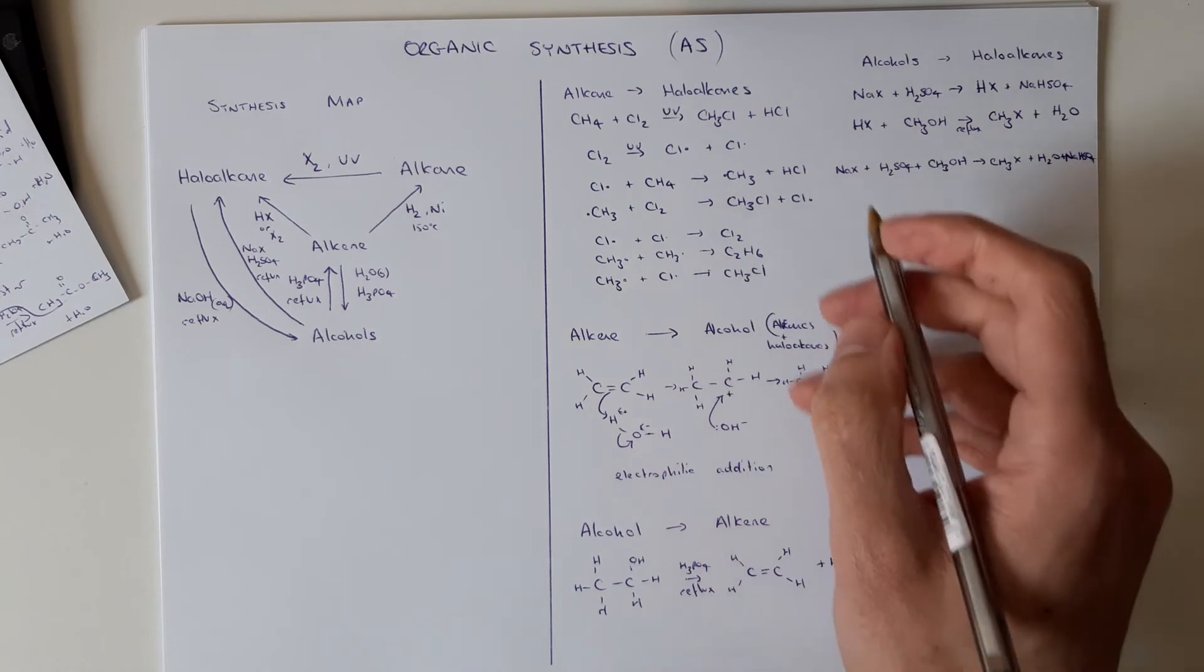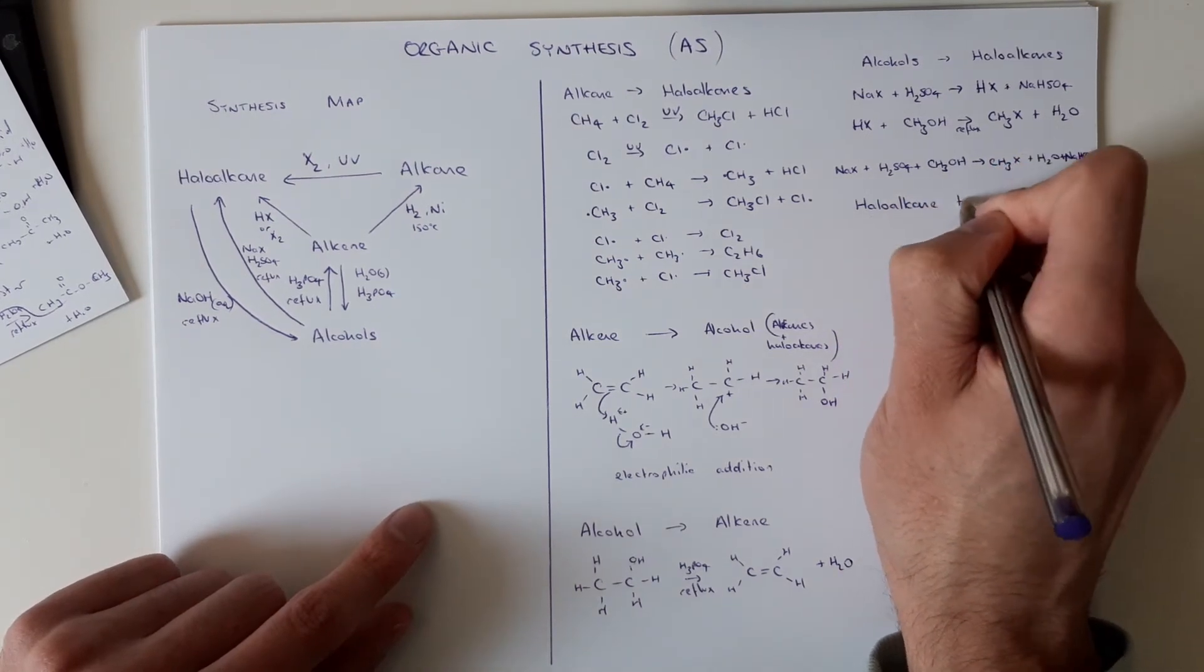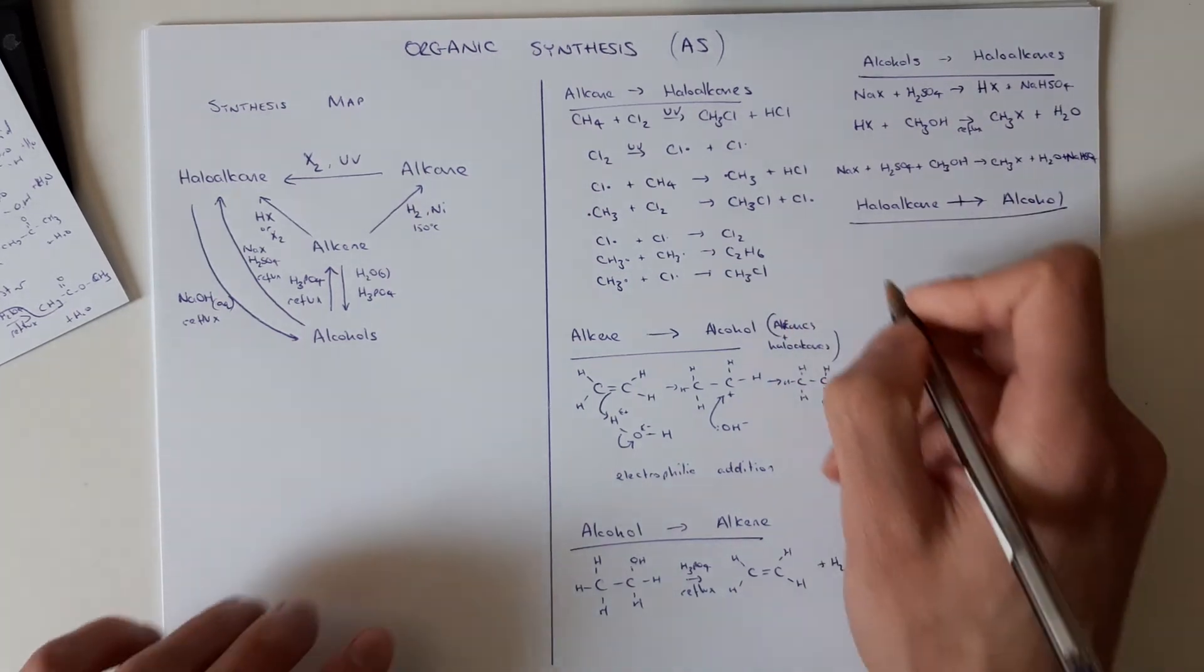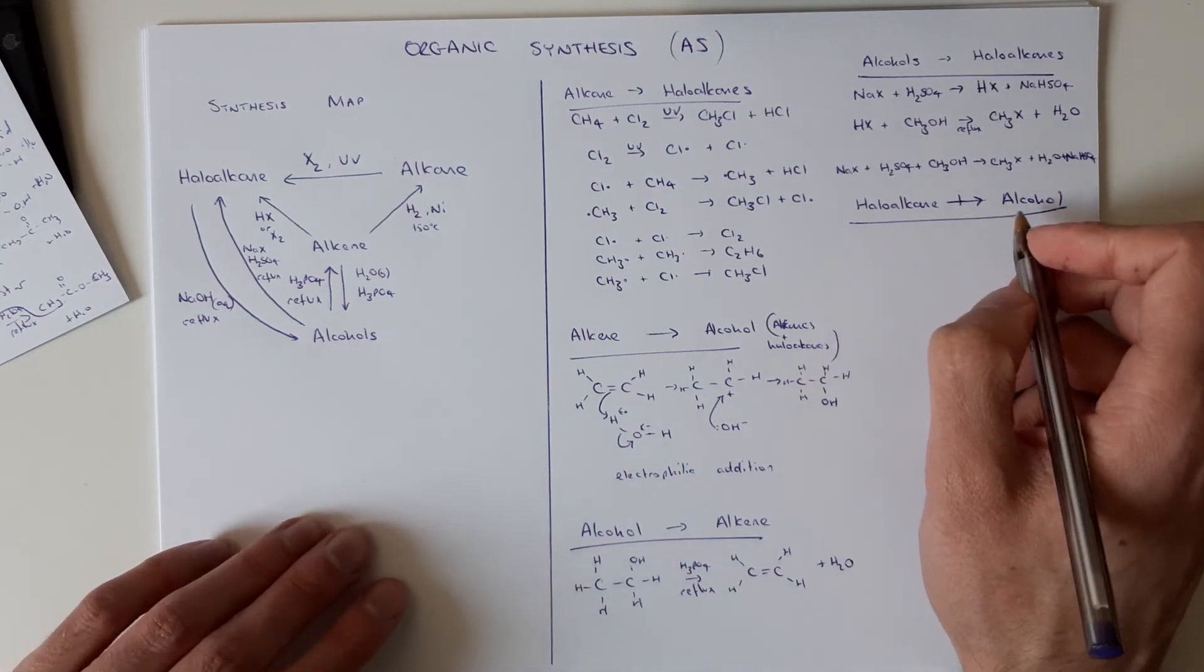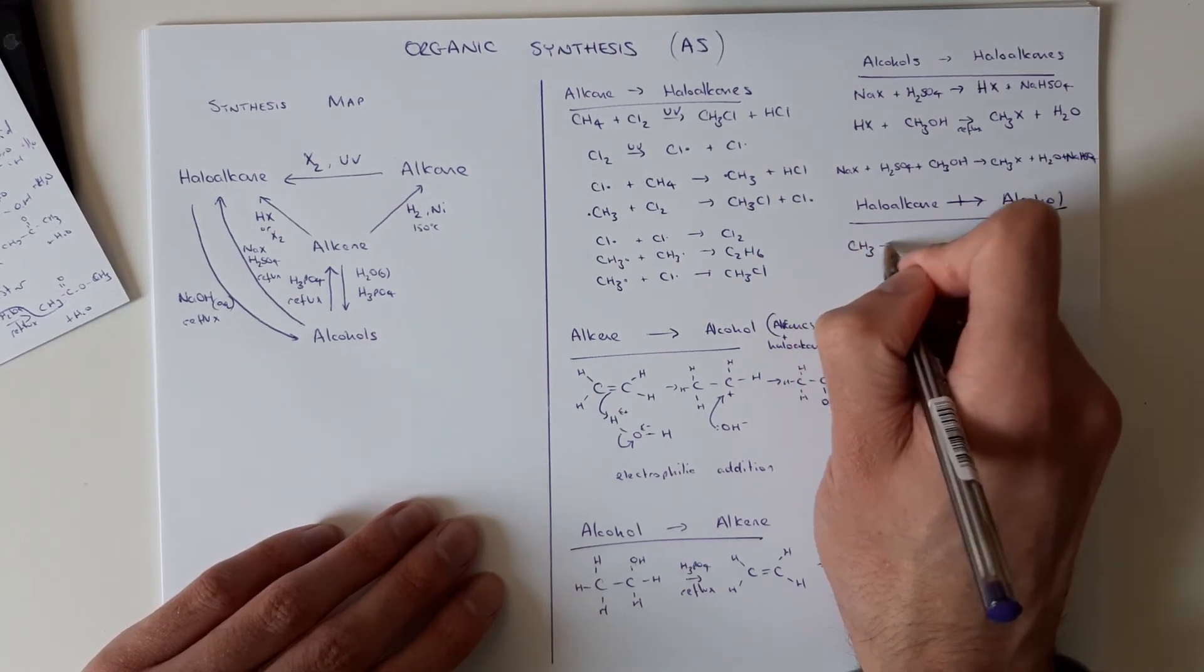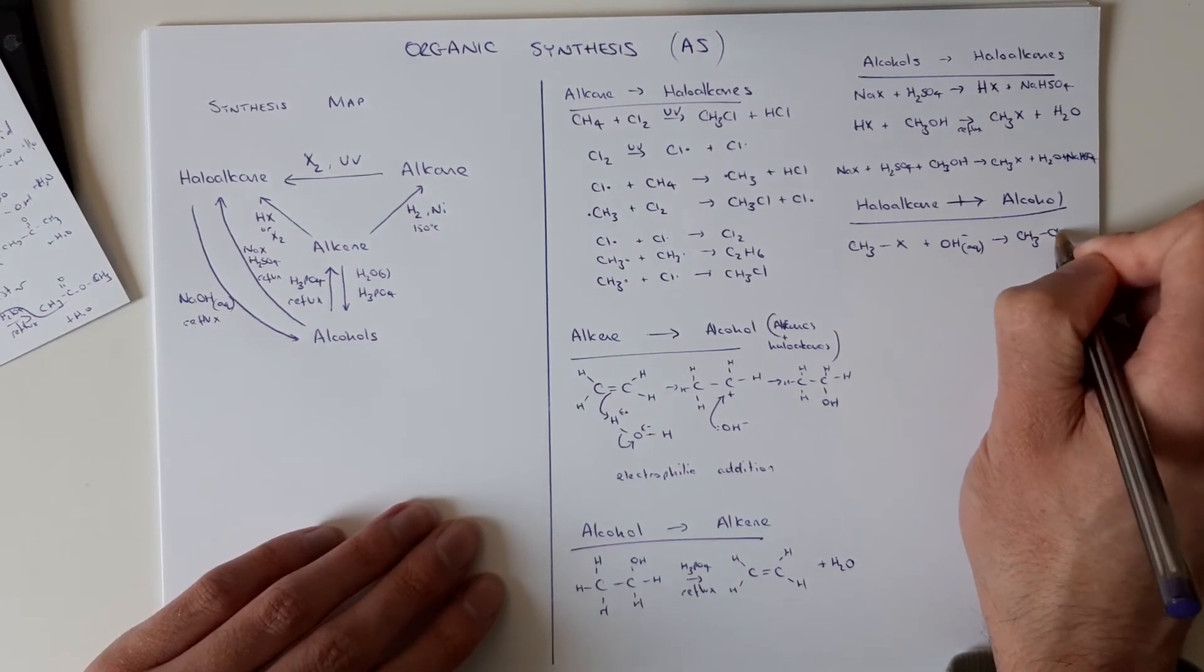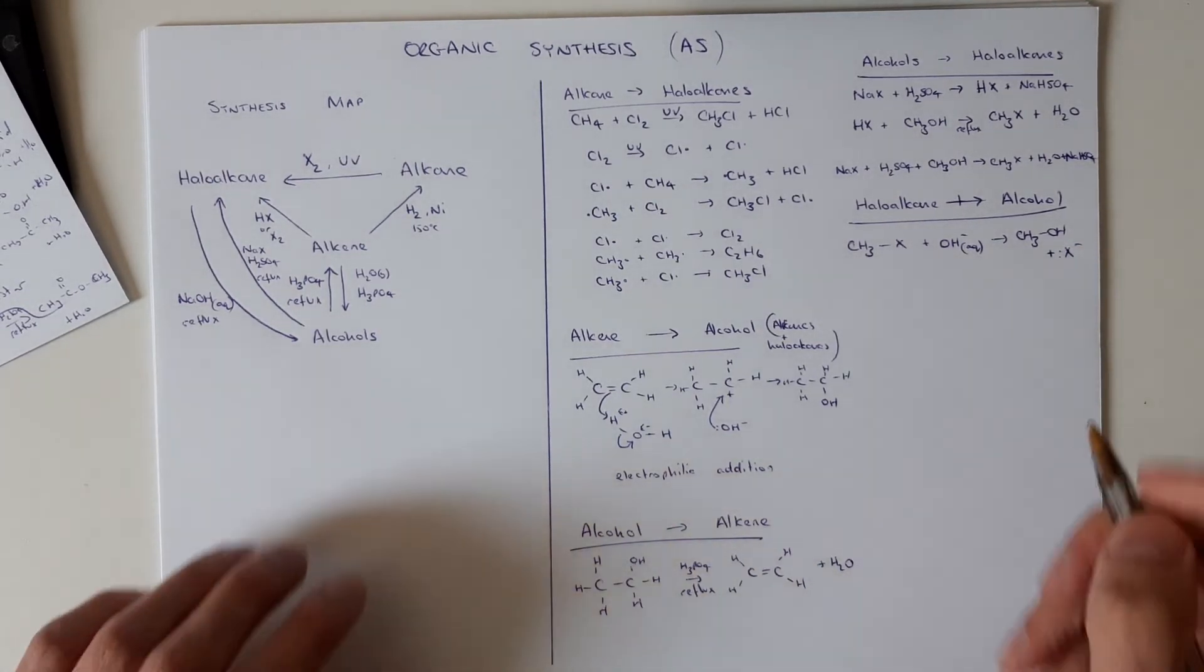So no mechanism to learn there, just need to know the reaction. From haloalkane to alcohol then is a mechanism we need. In this, we're going to do nucleophilic substitution. So haloalkane to alcohol, as we see we need NaOH under reflux. And that's the hydroxide ions, the key bit here. So if I take C3H7X where X can be any halogen with aqueous hydroxide ions, this substitutes round to give me my alcohol and X minus. Now we do need to know the mechanism for this.